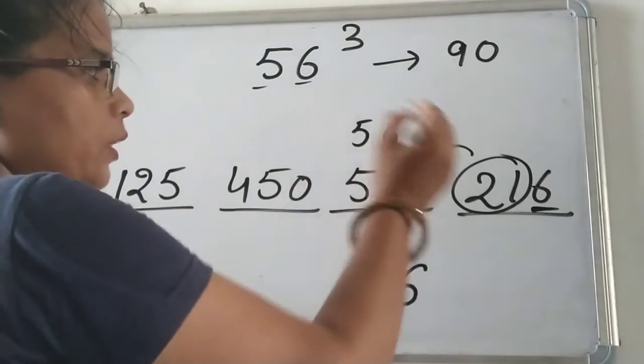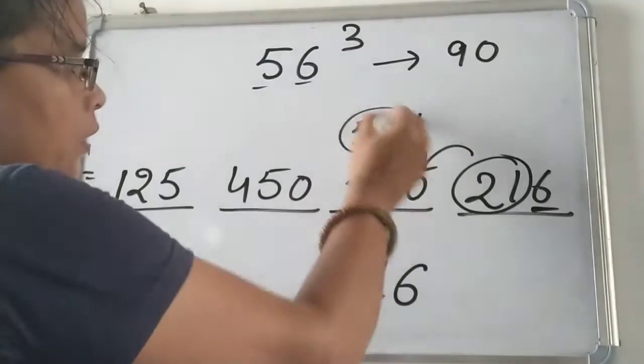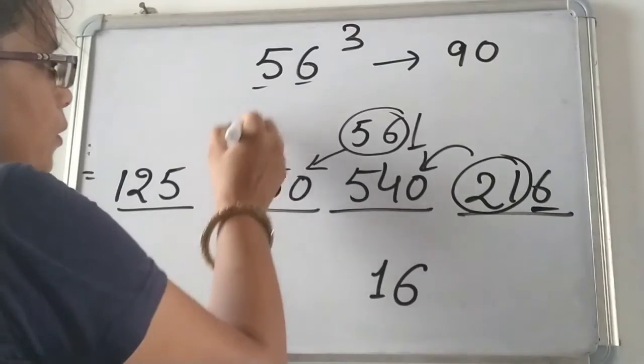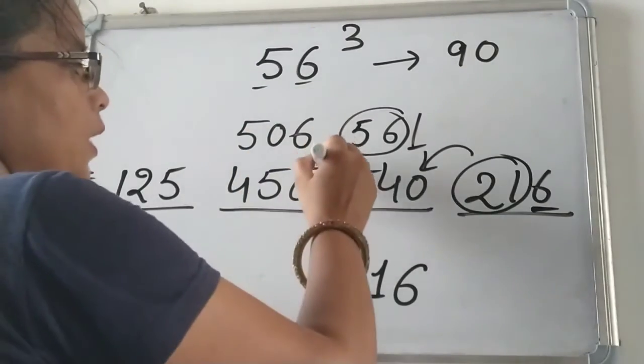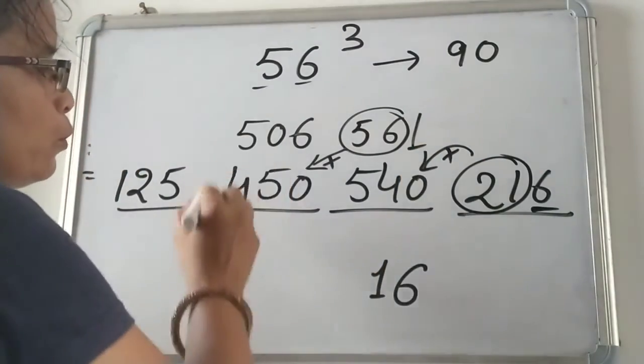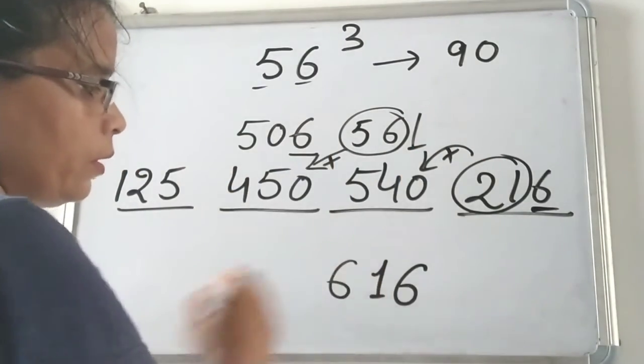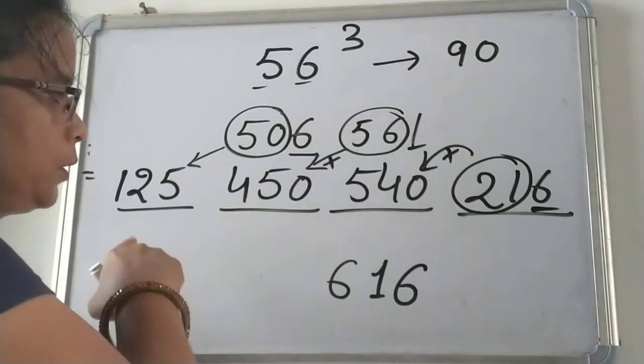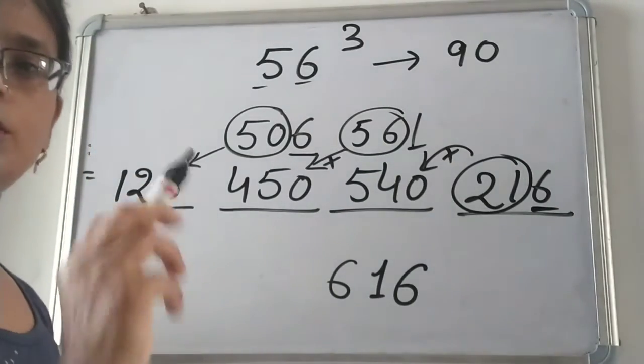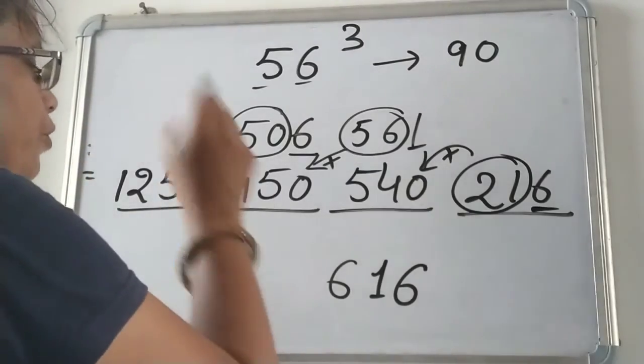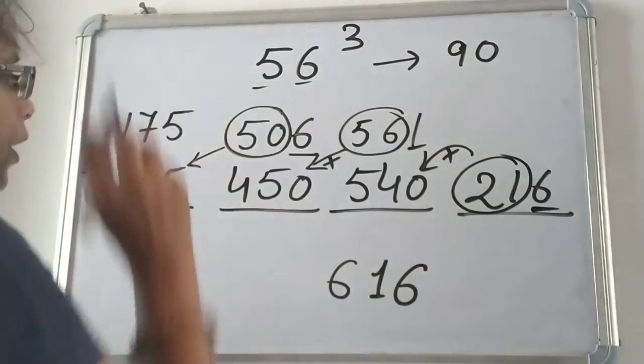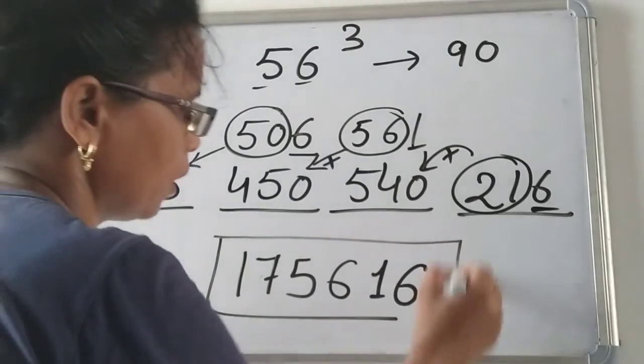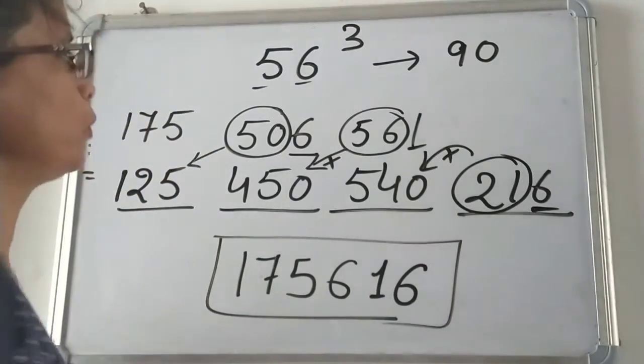Again this unit digit in answer here and this 56 will be added to this number, and we get here 506 by this addition. So again 6 is here and 50 will be added to this previous number. We get by the addition of 125 and 50, 175 and this 175 will come here. Now we get the cube of 56.